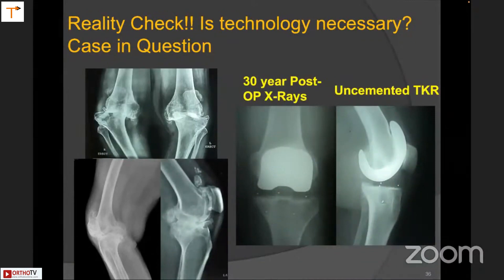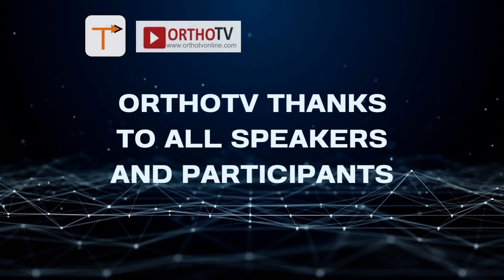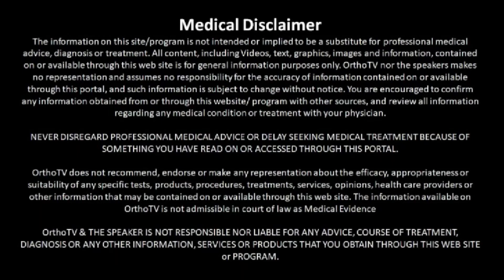One more thing before I wind up — this is one of my earliest patients, done in 1990: a Freeman Samuelson knee, uncemented, with an all-poly uncemented tibia. This patient has 150 degrees of knee flexion, is using an Indian-style toilet, weighs 115 kilograms, and these X-rays are from about six months ago. All I'm saying is: the best robot is right there — the surgeon's own hands and judgment. Thank you.